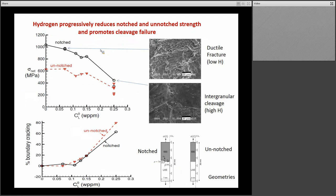Let me begin by showing some typical slides. If I show you a plain specimen — this is a bimaterial of a nickel-based superalloy laser-welded to low-alloy steel, pressure vessel steel such as used in the nuclear industry — this would be a bimaterial in an un-notched configuration, axisymmetric geometry. Here's the notch configuration with a notch.